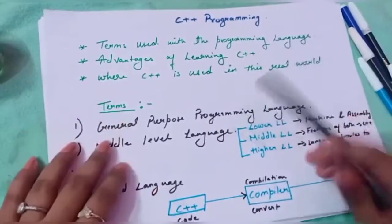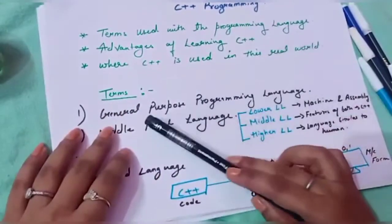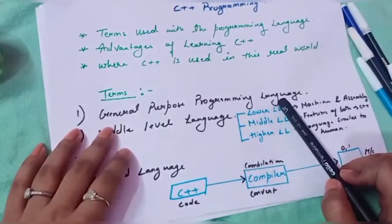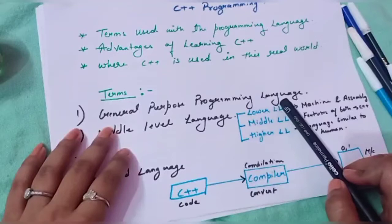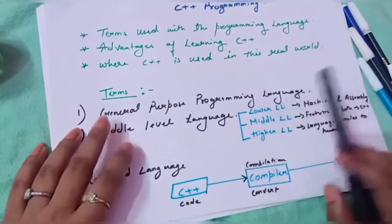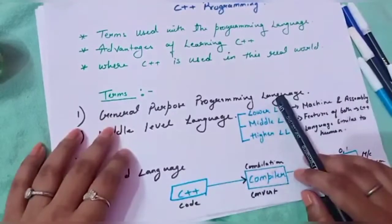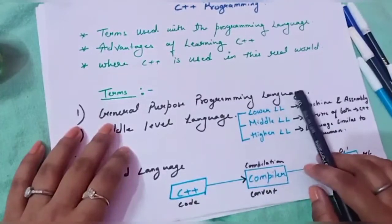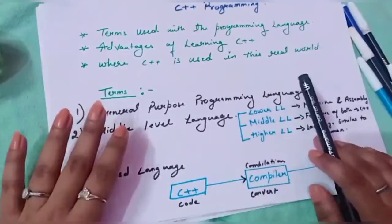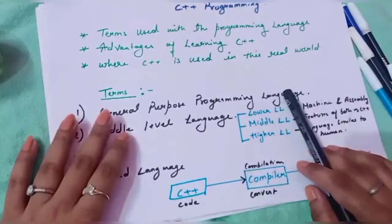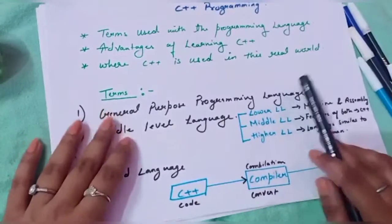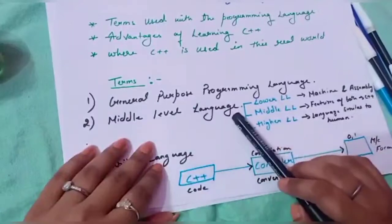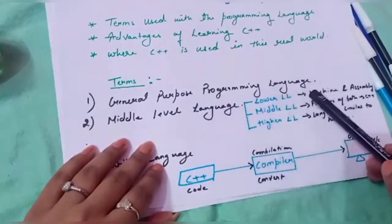Starting with the first topic: terms used with the programming language. The first term is 'general purpose programming language.' C++ is a general purpose programming language — we can use it to create general purpose applications or software. Because it is a general purpose programming language, it is easy to understand.